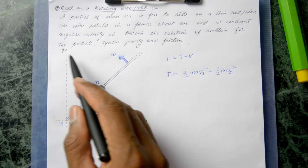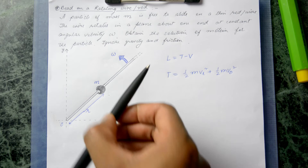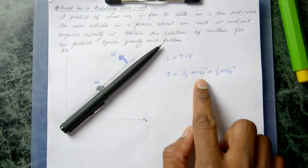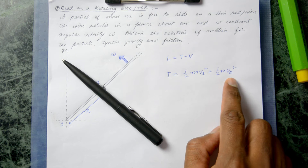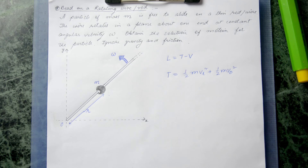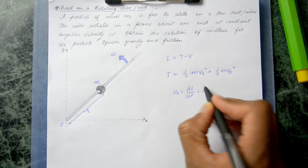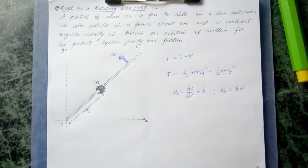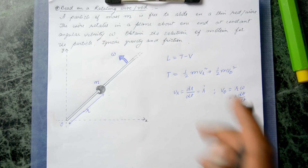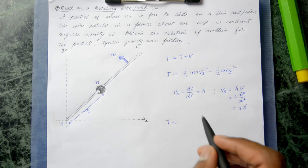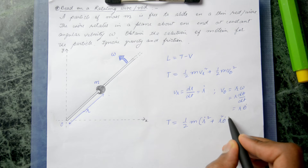I'm working in polar coordinates. The radial velocity V_R is the velocity along the radial direction, equal to Ṙ (dR/dt). V_θ is the velocity along the tangential direction, equal to R·θ̇, where θ̇ is the angular velocity omega. So the kinetic energy is T = one-half m·Ṙ² + one-half m·R²·θ̇².